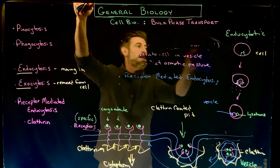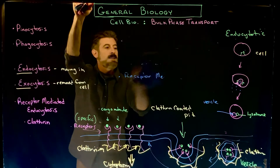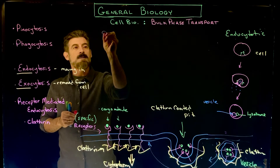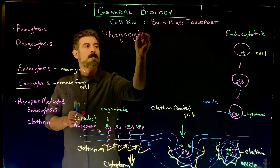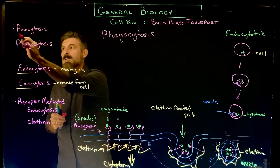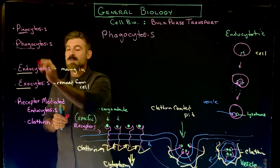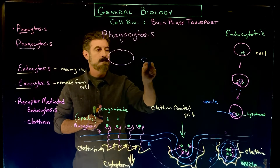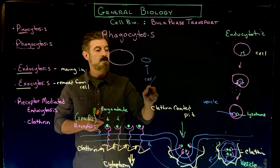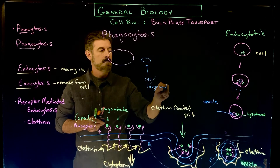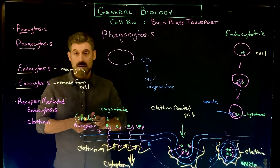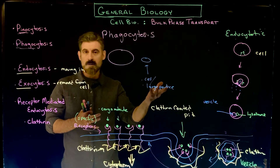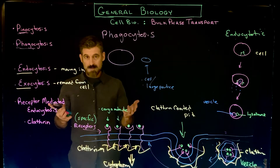The other process to discuss briefly is phagocytosis. Unlike pinocytosis, which is sometimes called cellular drinking, phagocytosis is sometimes called cellular eating. This is where one cell engulfs another cell or an extremely large particle. A cell is made of all kinds of molecules — lipids, carbohydrates, proteins, DNA, RNA — not one specific molecule. The large particle being engulfed is similarly a conglomerate of many different types of molecules.